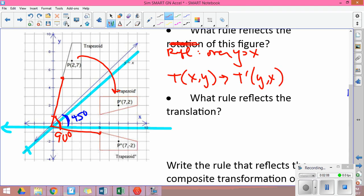Then when we look at what rule reflects the second reflection, the second reflection we went from P prime to P.